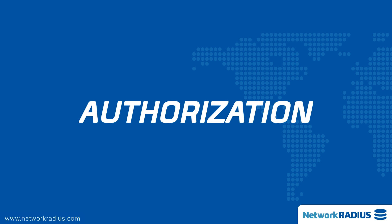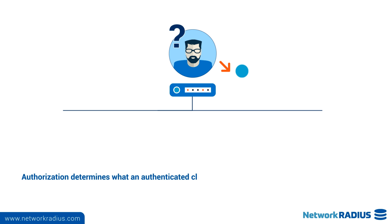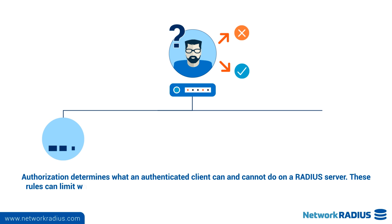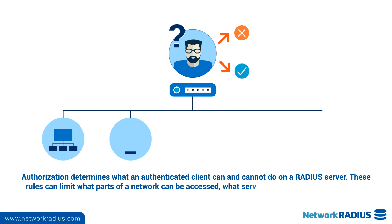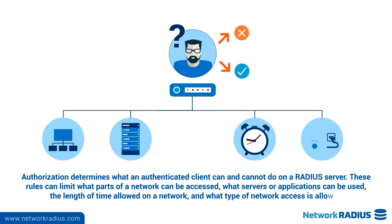Authorization determines what an authenticated client can and cannot do on a Radius server. These rules can limit what parts of a network can be accessed, what servers or applications can be used, the length of time allowed on the network, and what type of network access is allowed.